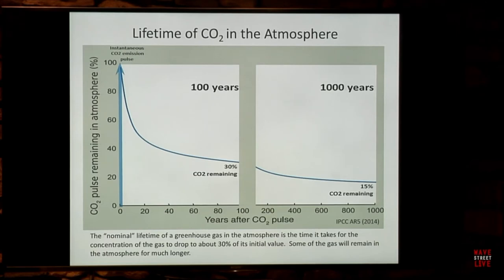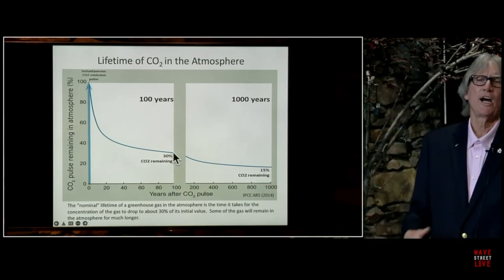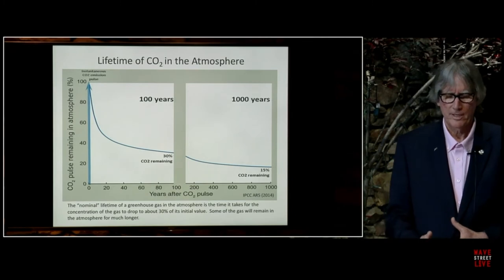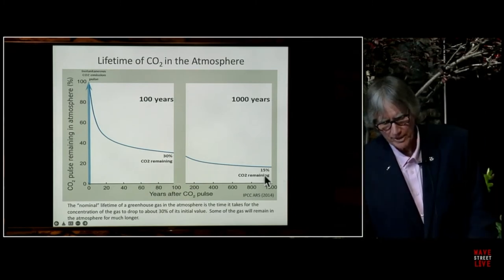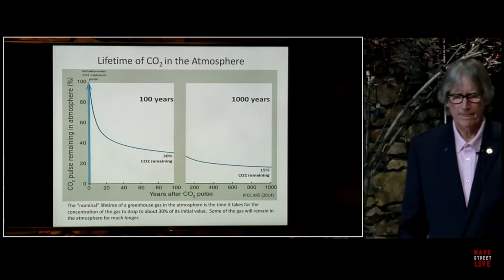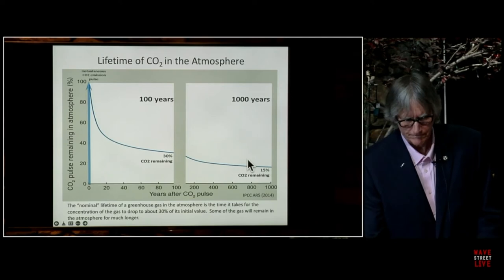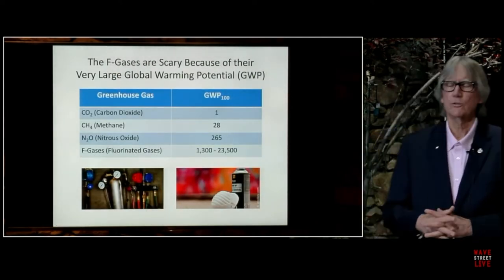The nominal lifetime of CO2 in the atmosphere is often cited as 100 years. If you put a large pulse of CO2 into the atmosphere, it starts decreasing pretty rapidly from the very beginning, but after about 100 years you still have about 30% remaining. If you go out 1,000 years, you still have about 15% remaining. So when you're driving your car and putting CO2 into the atmosphere through the tailpipe, most of it has gone in 100 years, but some will still be there 1,000 years from now.